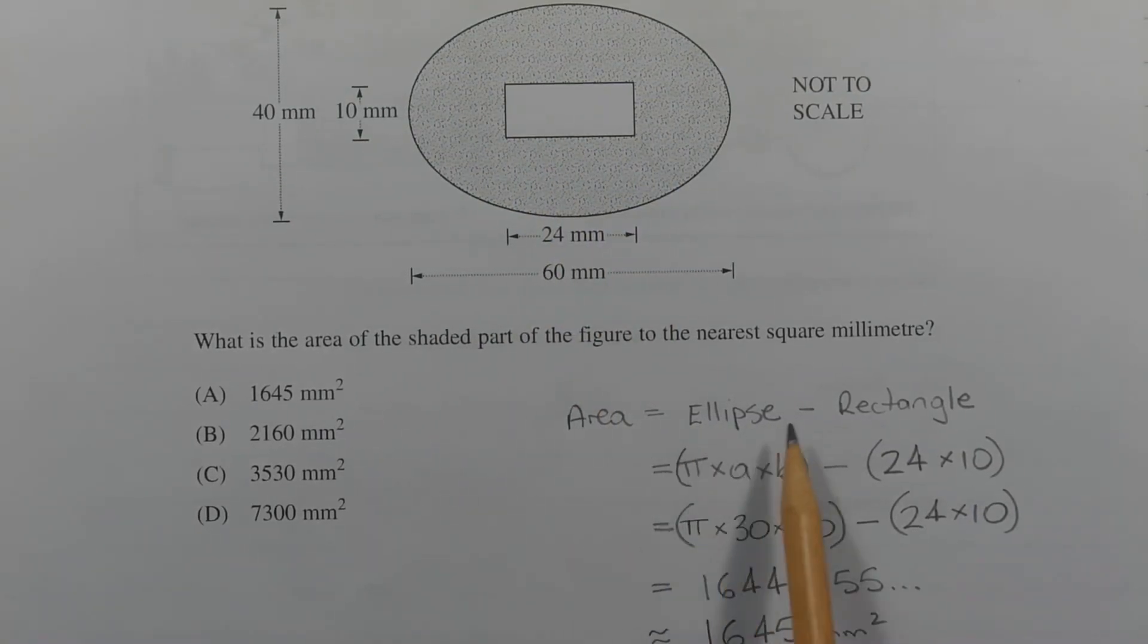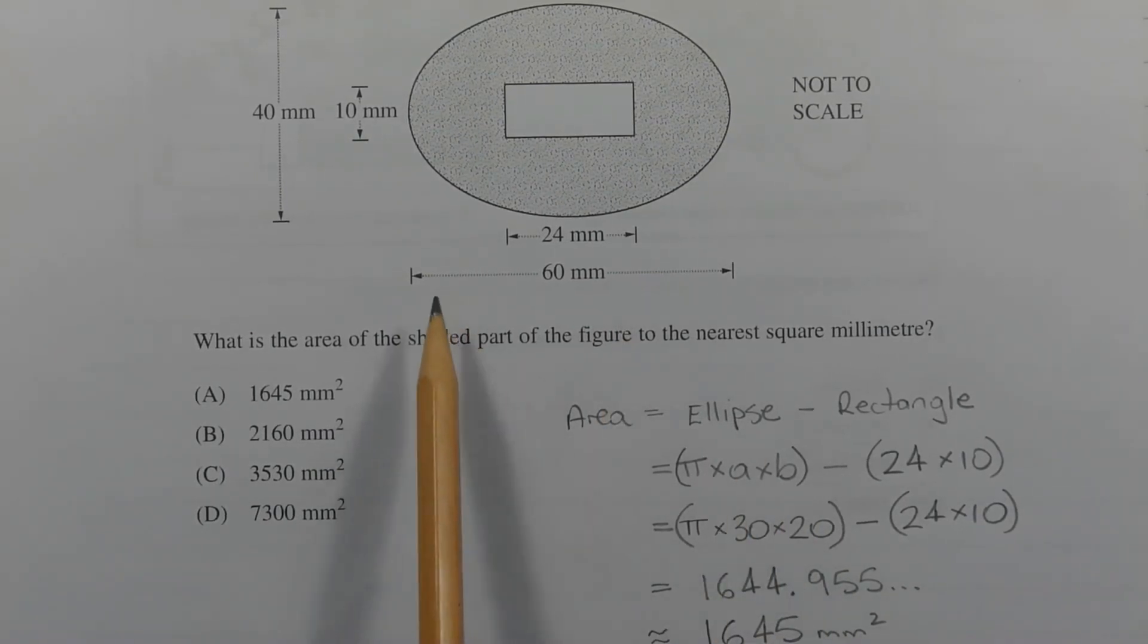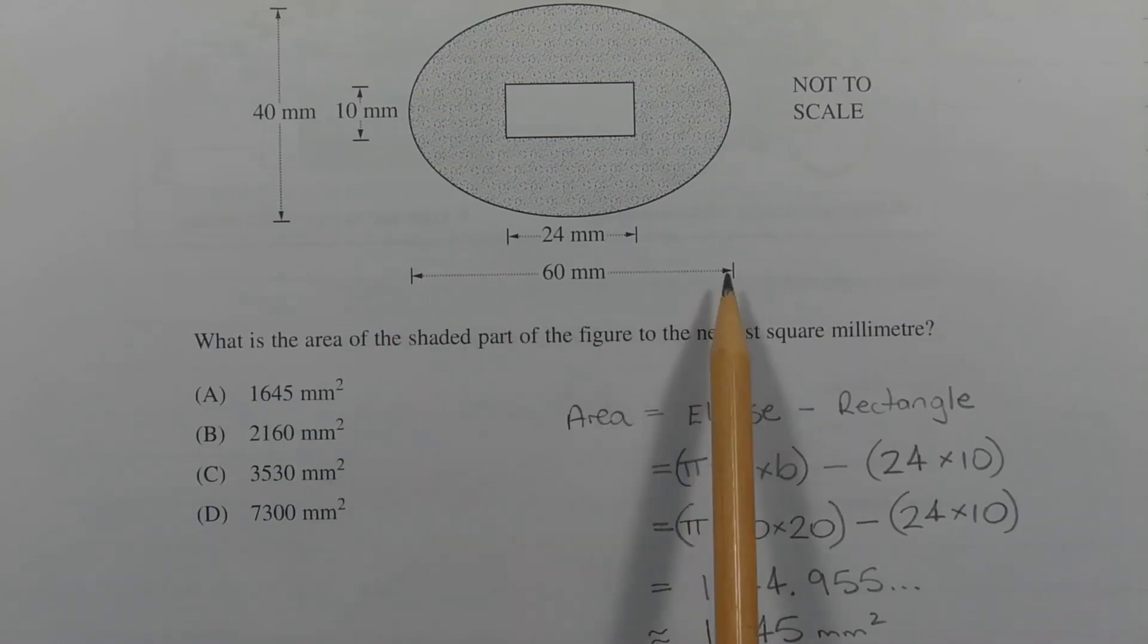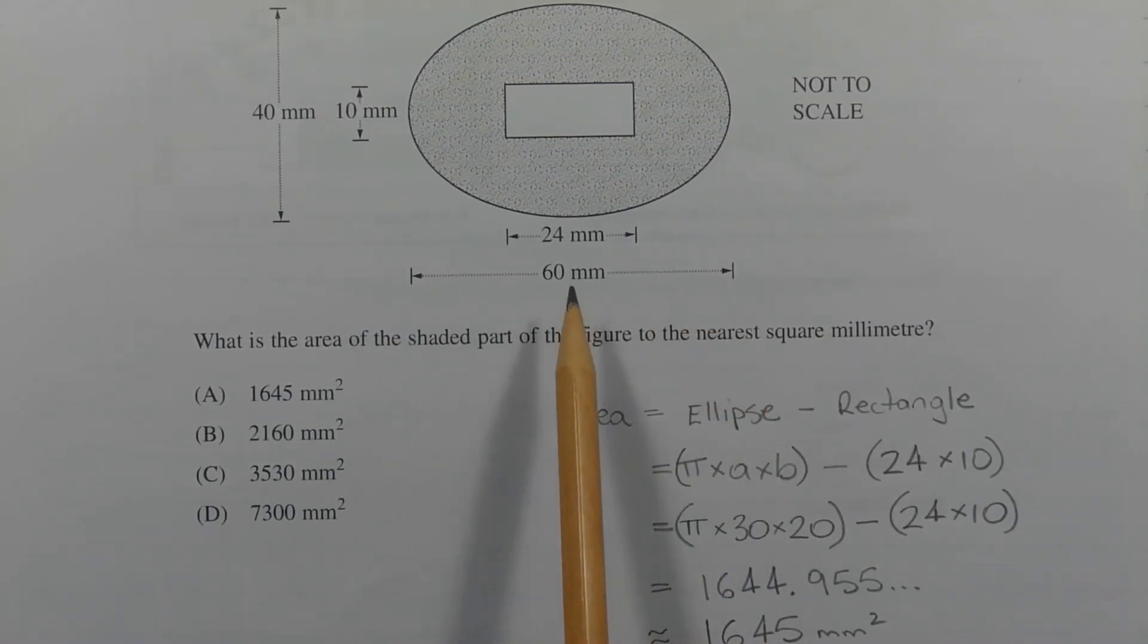So, area equals ellipse minus rectangle, and the formula for the area of an ellipse is given as π times a times b, where a is half the length of the long axis. Now the long axis is 60mm and half of 60mm is 30mm, so a is equal to 30.